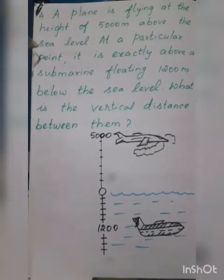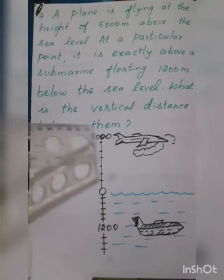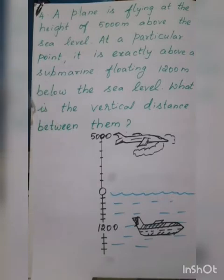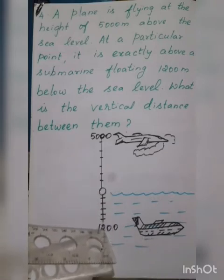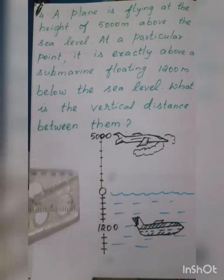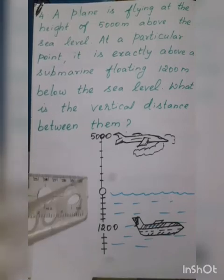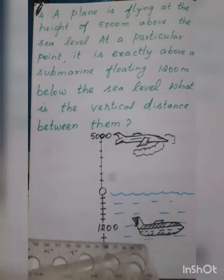Fourth sum. A plane is flying at the height of 5000 meters above the sea level. At a particular point, it is exactly above a submarine floating 1200 meters below the sea level. What is the vertical distance between them?